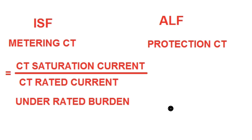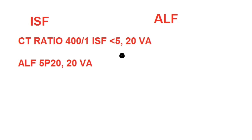I will elaborate by means of an example. CT ratio is 400/1, where ISF is less than 5 for 20 VA. 20 VA is the burden of the CT. So Instrument Safety Factor is less than 5 under rated burden of 20 VA, meaning if the CT secondary burden is 20 VA and 5 times the rated current flows in the primary side, the CT will saturate its metering core. ALF is mentioned as 5P20 under a burden of 20 VA.